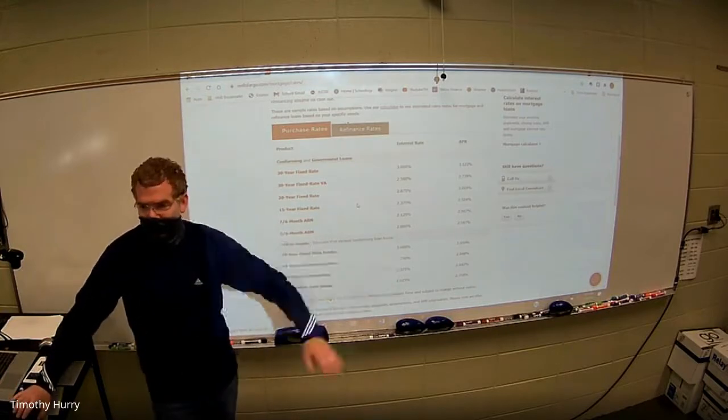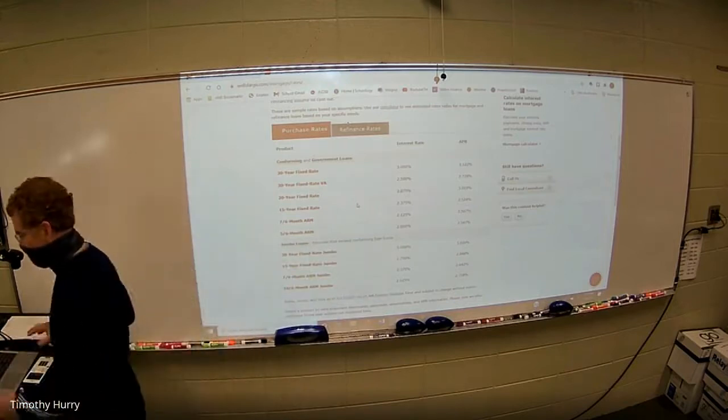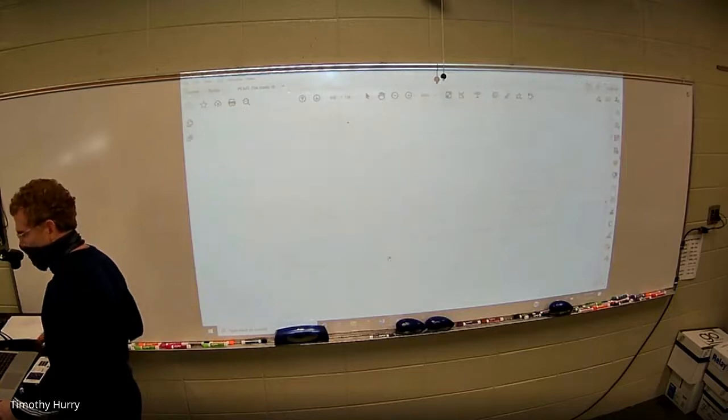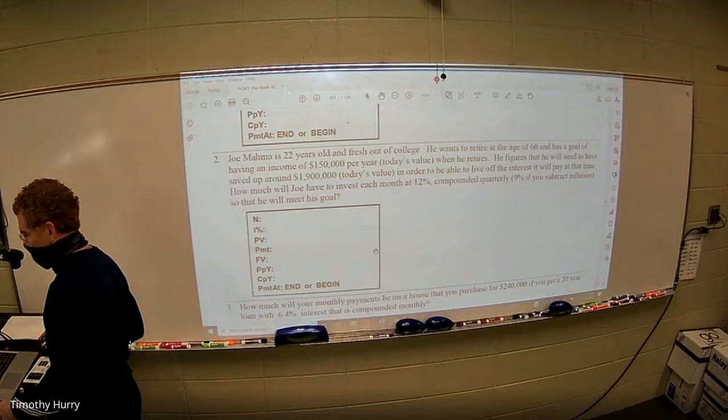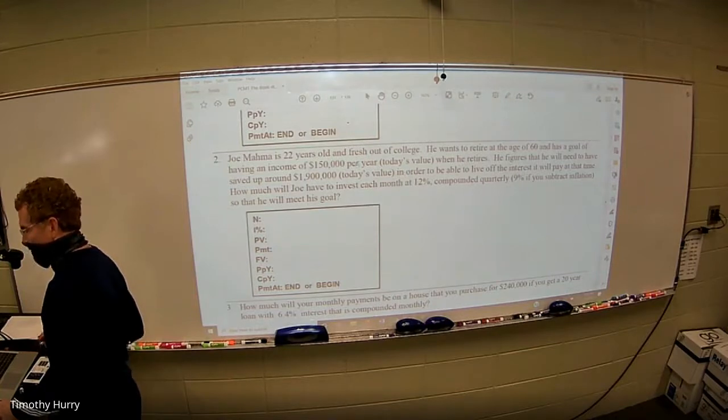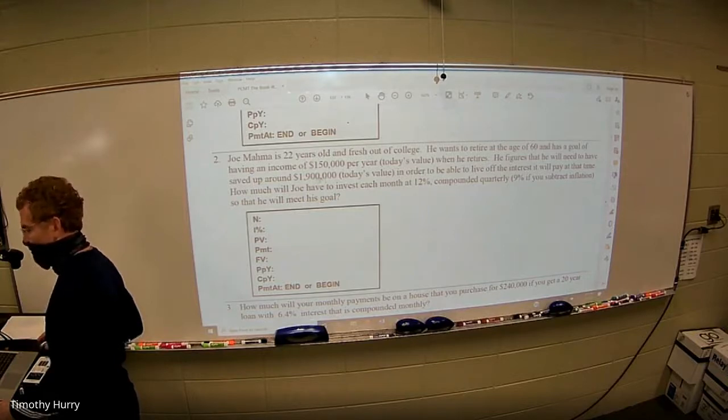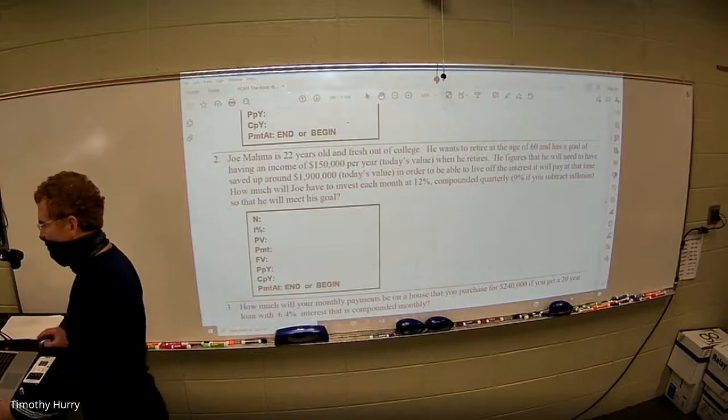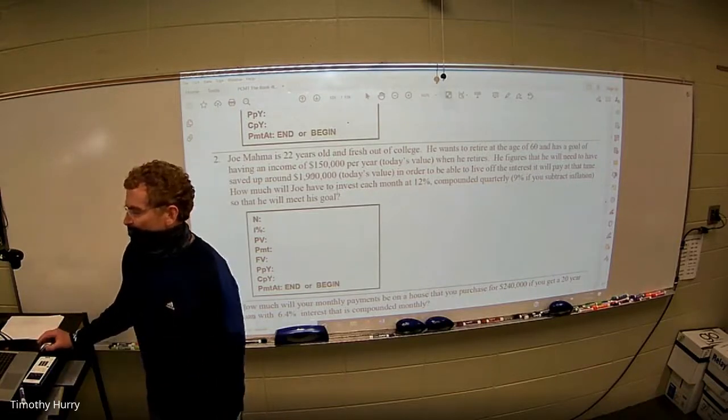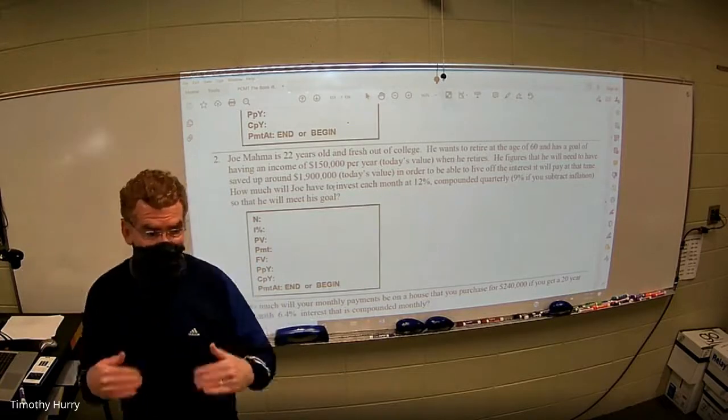Anybody else got any questions on any of this? Yeah. On number two on the homework. Should we use 9% or 12% here? Okay. So I want to have an income of $150,000 a year. I figure she will have to have saved about this much. Again, you're going to need a lot more than that at this rate to be able to live off that. So basically, I'm treating that in today's value.